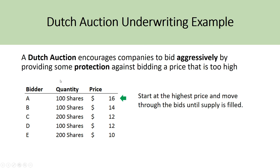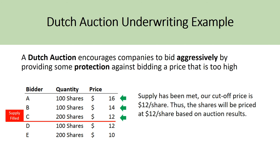Starting at $16 a share — with a total supply of 400 shares — only Bidder A would buy, taking 100 shares. The bank then moves to $14, where Bidder B also buys 100 shares, bringing total demand to 200, still below the 400 supply. At $12, Bidder C wants 200 shares. Looking at Bidders A, B, and C combined, that meets the entire supply of 400 shares offered by ABC Corp. Therefore, supply is filled at a competitive price of $12 a share, making $12 the cutoff price.